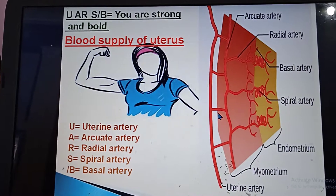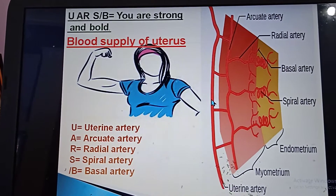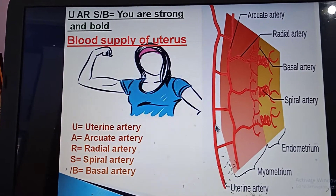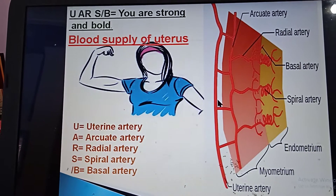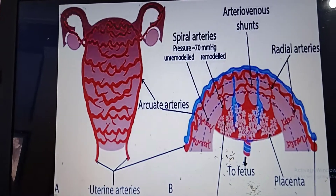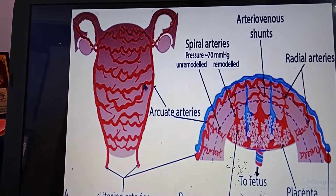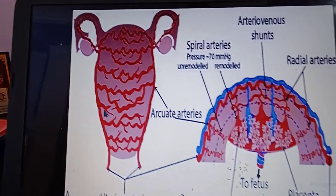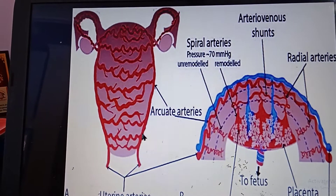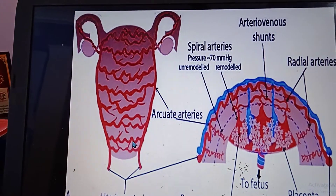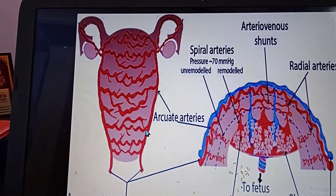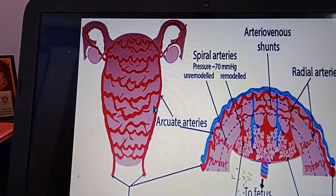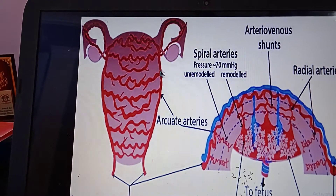In this longitudinal section of the uterus, we can see the uterine artery on either side — they come in pairs. The uterine artery gives rise to arcuate arteries, one on the anterior aspect and another on the posterior aspect. We can see many arcuate arteries here.